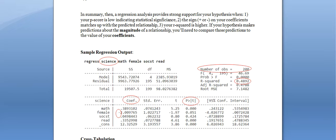Let's start by looking at the sample regression output from the main body of the chapter. What we're looking at is a breakdown of the statistics you need to pay attention to. The first variable listed after the word 'regress' at the top of a regression output is always your dependent variable. In this sample, the dependent variable is science, representing a test taker's score on the science portion of a standardized exam.